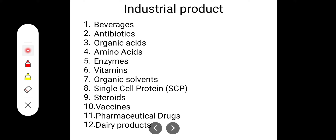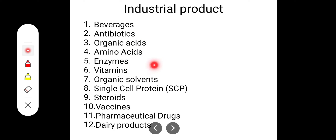These are the different industrial products that can be produced using microorganisms in various industries: beverages, soft drinks, antibiotics, penicillin, organic acids, amino acids, enzymes, vitamins, organic solvents, single cell protein (also known as SCP), steroids, vaccines, pharmaceutical drugs, and dairy products.